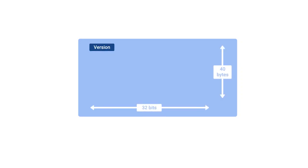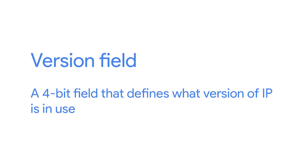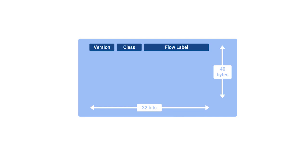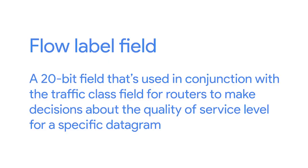When IPv6 was being developed, they took the time to introduce a few improvements instead of just figuring out a way to increase the address size. One of the most elegant improvements was made to the IPv6 header, which is much simpler than the IPv4 one. The first field is the version field — a 4-bit field that defines what version of IP is in use. The next field is the traffic class field — an 8-bit field that defines the type of traffic contained within the IP datagram, allowing different classes of traffic to receive different priorities. The next field is the flow label field — a 20-bit field used in conjunction with the traffic class field for routers to make decisions about the quality of service level for a specific datagram.